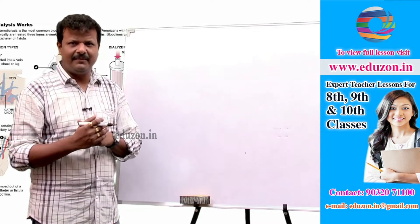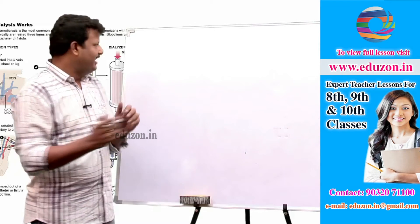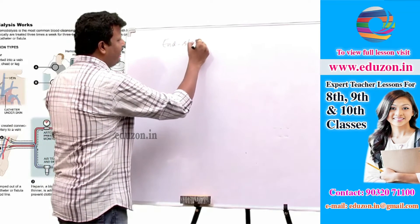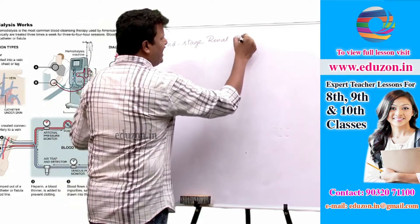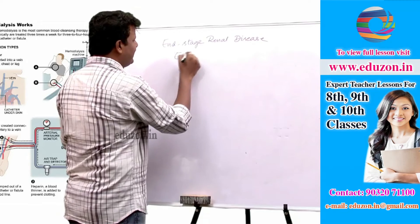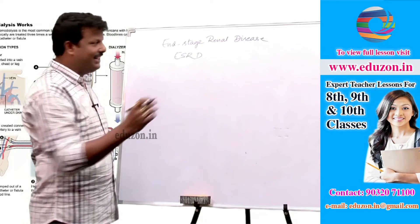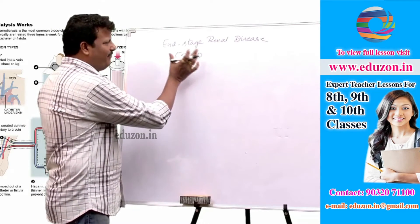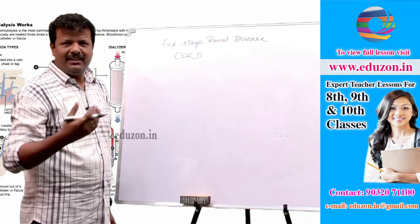When both kidneys fail at the same time, that condition is called End Stage Renal Disease, or ESRD. When both kidneys fail to function properly, the waste materials present in our body get mixed with the blood, and that condition is called uremia.